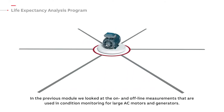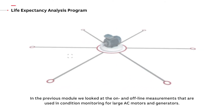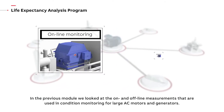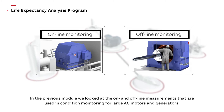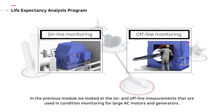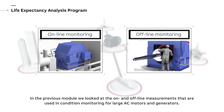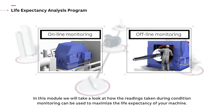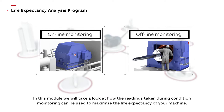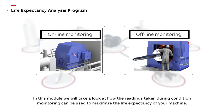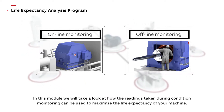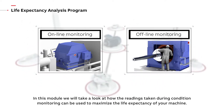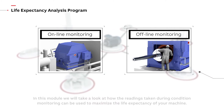In the previous module we looked at the on and offline measurements that are used in condition monitoring for large AC motors and generators. In this module we will take a look at how the readings taken during condition monitoring can be used to maximize the life expectancy of your machine.